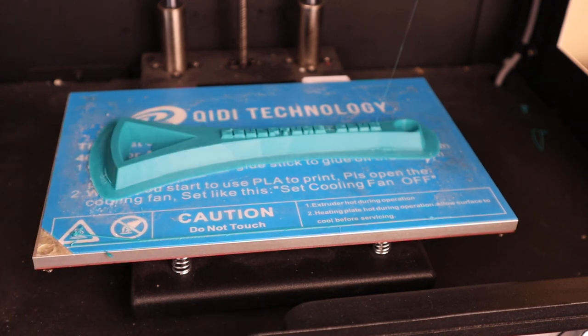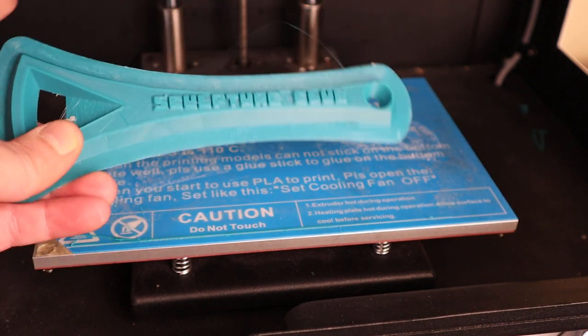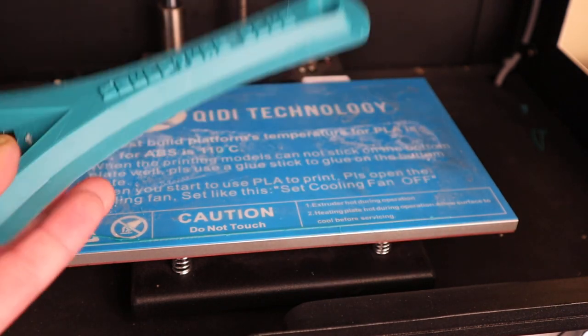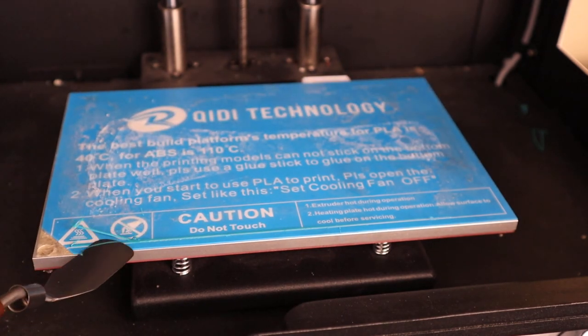So now you can see it's loose. Easily pop that off. And you can see this is the brim. Take that off. Remove any debris.